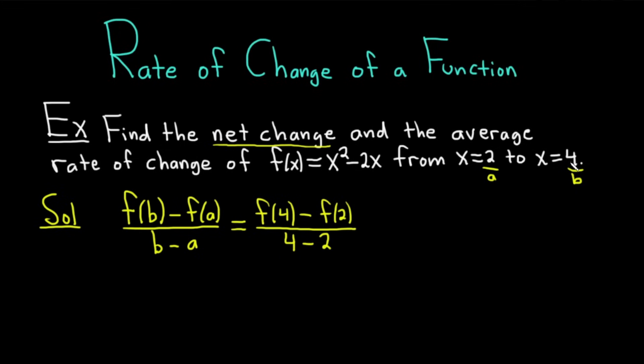It's just where you finish, f at where you finish minus f at where you start, over where you finish minus where you start. One way to think about it but really easy to memorize. You see how the b's match here and the a's match here.